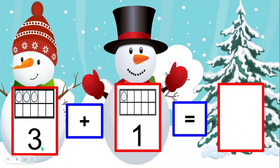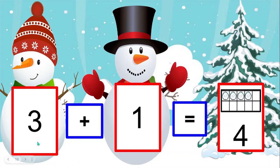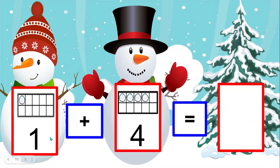Three snowballs plus one snowball equals how many snowballs? Three plus one equals four snowballs. One snowball plus four snowballs equals how many snowballs?